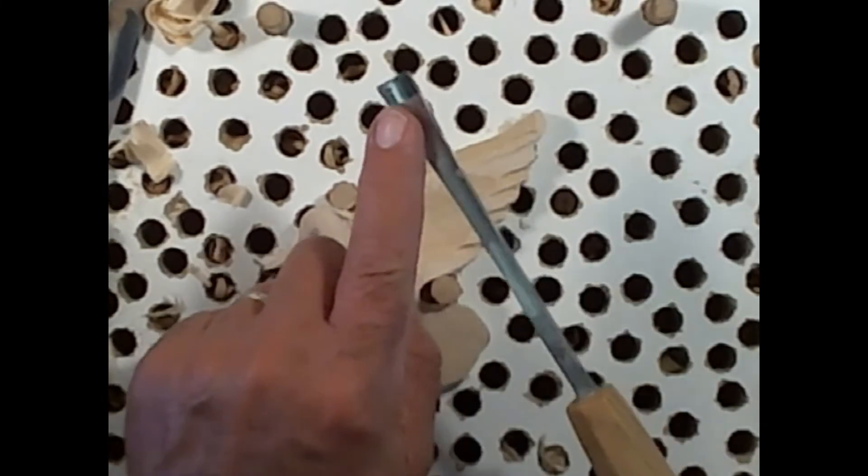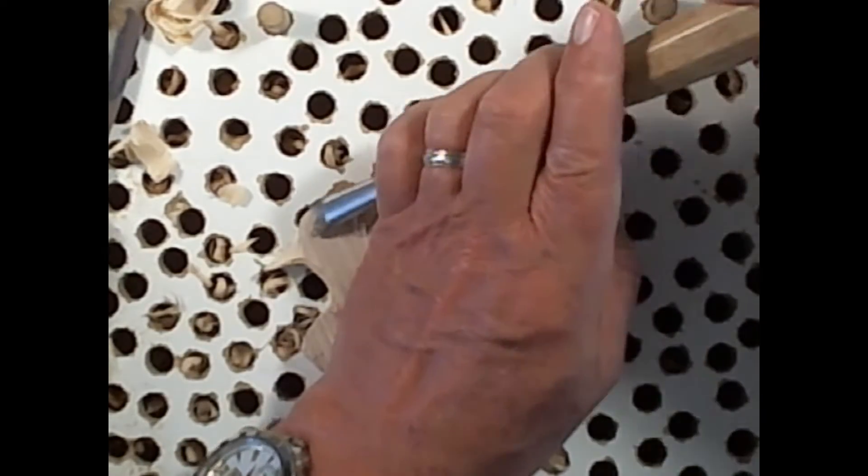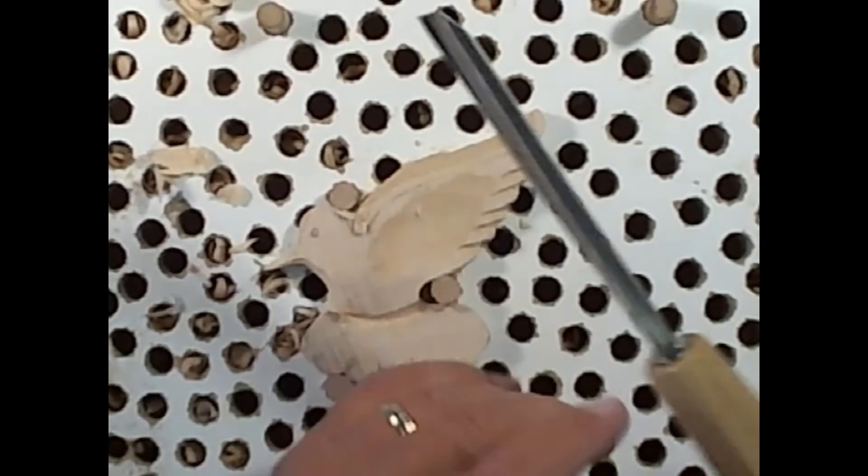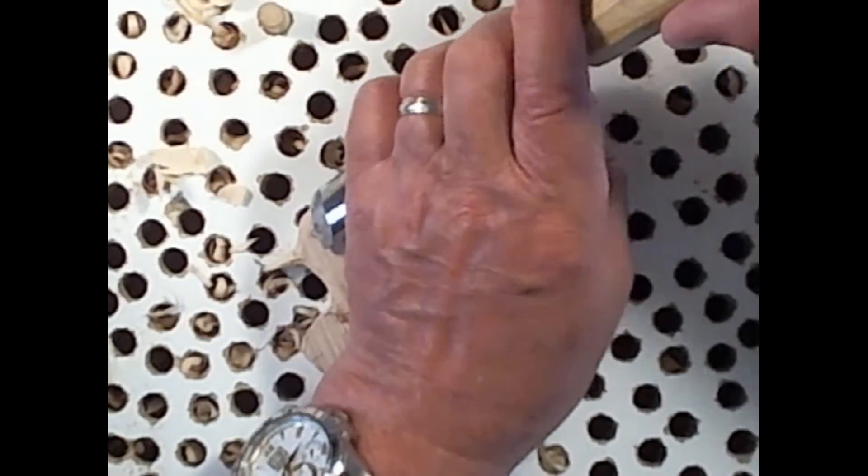You can turn the gouge upside down. Come down like this. Using either the number five, twelve millimeter or the number three.